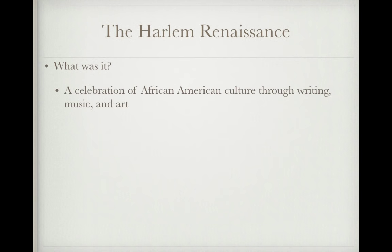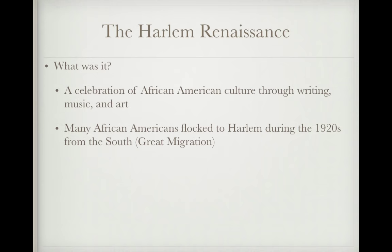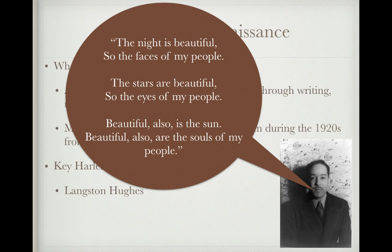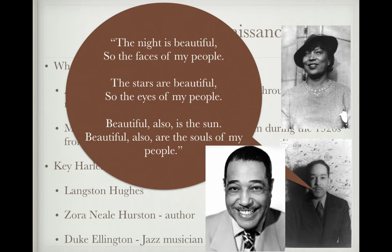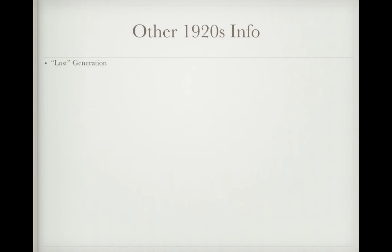The Harlem Renaissance centered in Harlem, New York and was a celebration of African-American culture through writing, music, and art. Many African Americans flocked to Harlem during the 1920s from the South as part of the Great Migration. Key figures include Langston Hughes, whose poem reads: 'The night is beautiful, so the faces of my people. The stars are beautiful, so the eyes of my people. Beautiful also is the sun. Beautiful also are the souls of my people.' Zora Neale Hurston was a well-known author and Duke Ellington a celebrated jazz musician.